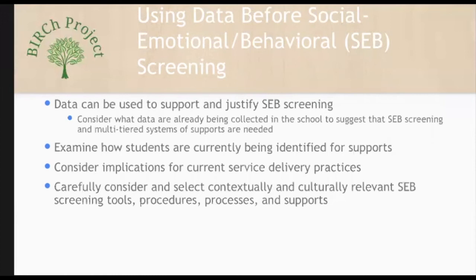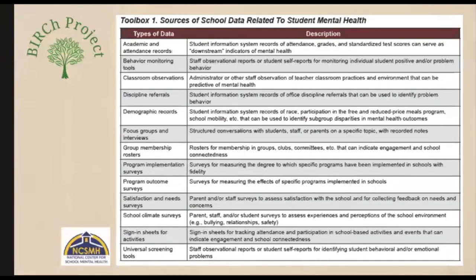Be sure to use data to examine how students are currently being identified for supports. If a multi-tiered system of support is not being used, are supports only for students eligible for special education? If a multi-tiered system of supports is implemented, who receives Tier 2 and Tier 3 services and how is that determined? What are the implications if current delivery practices are maintained or changed? The table shown here provides examples of school data related to school mental health from the National Center for School Mental Health, offering ideas of where and how to collect data to support SEB screening.